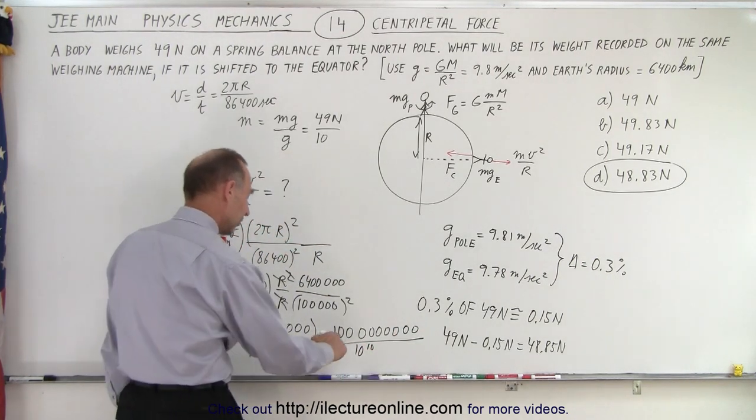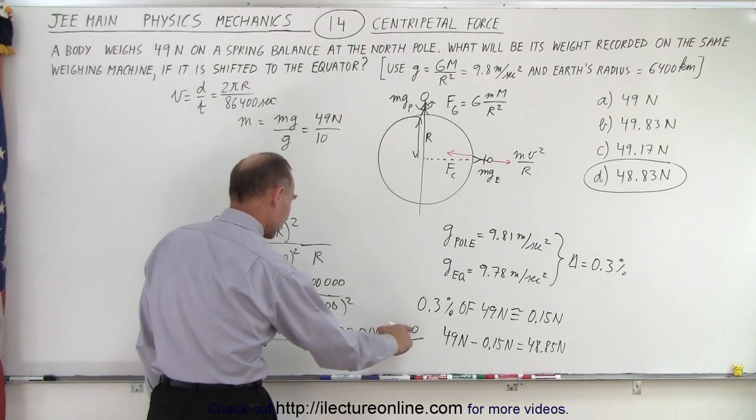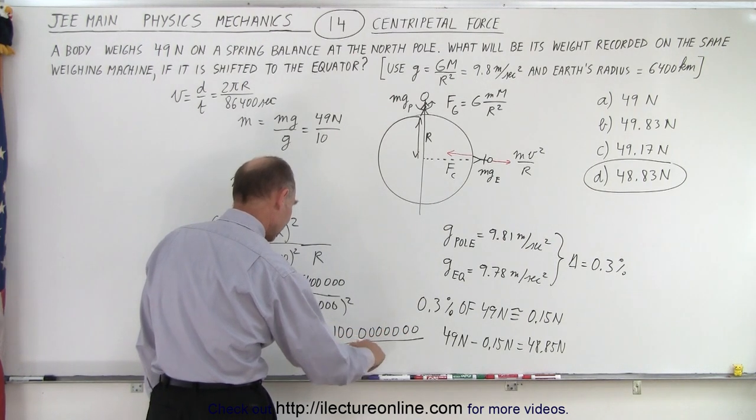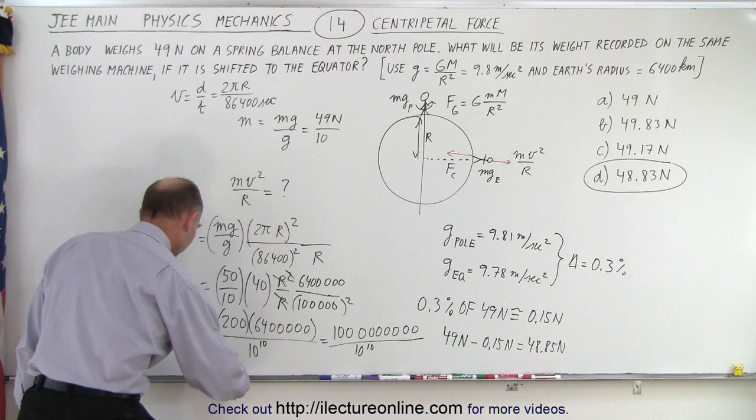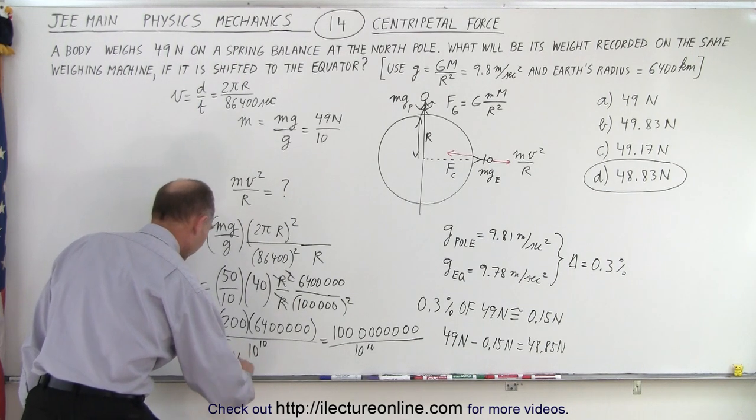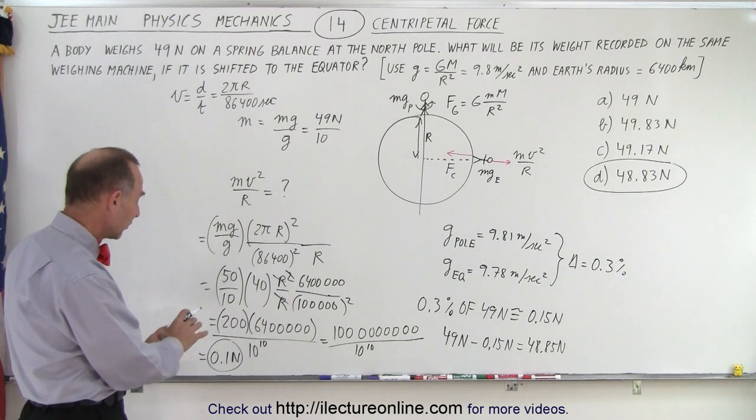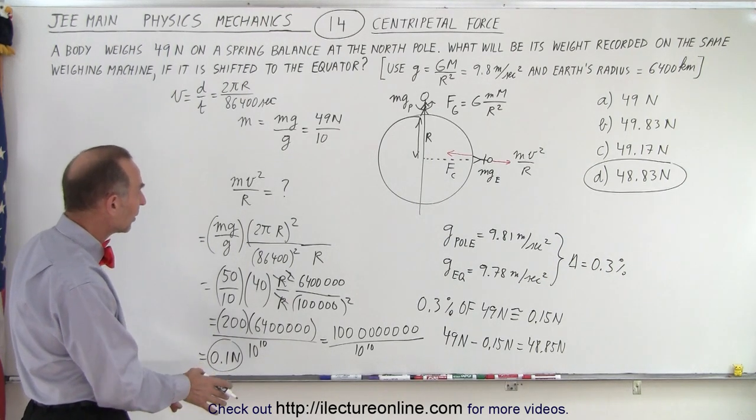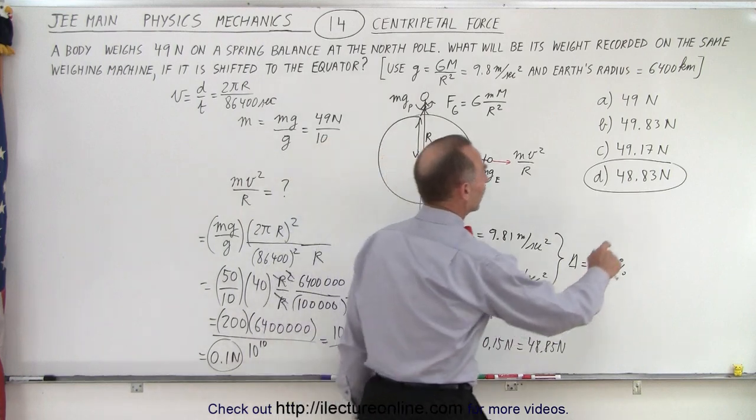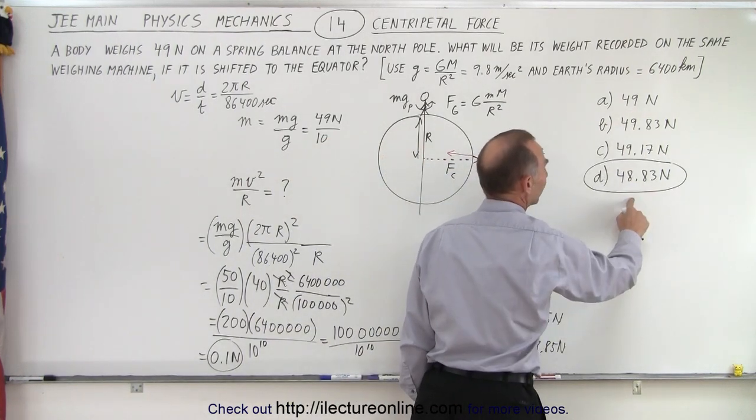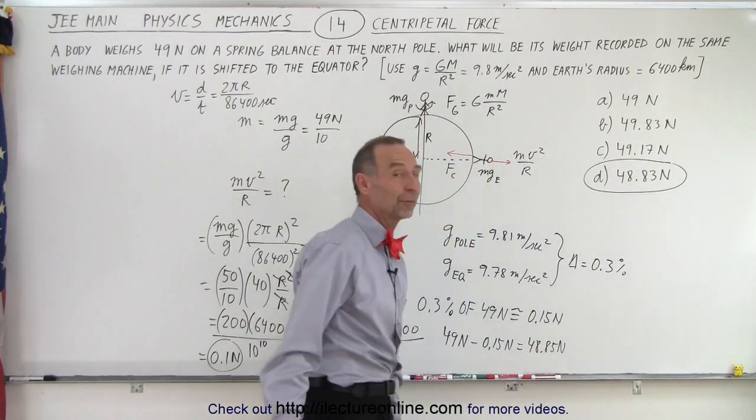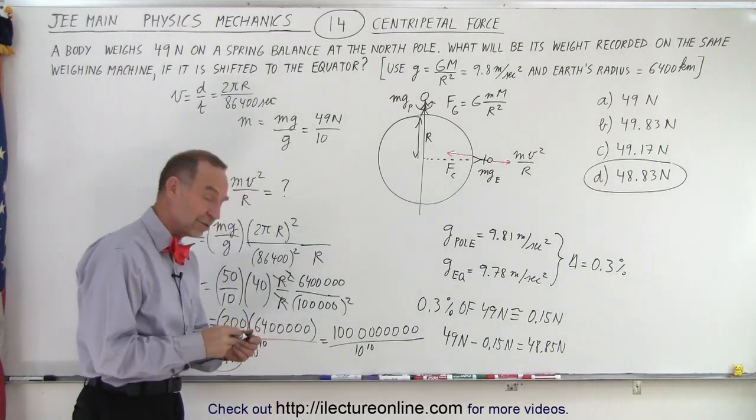And notice that this is 1, 2, 3, 4, 5, 6, 7, 8, 9 zeros. So that would be about 0.1 newton. And so very roughly calculated, you would weigh about a tenth of a newton less at the equator than you would do at the poles. And of course, you subtract a tenth from 49, you get 48.9. Again, close to the number they have there. And again, you feel comfortable that you got the right answer. But this is a lot of work that would take a long time. It's not necessary if you simply realize that it has to be less because you're affected by the centripetal motion of the Earth's rotation.